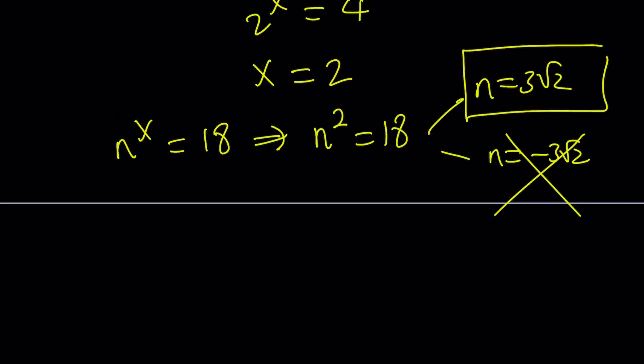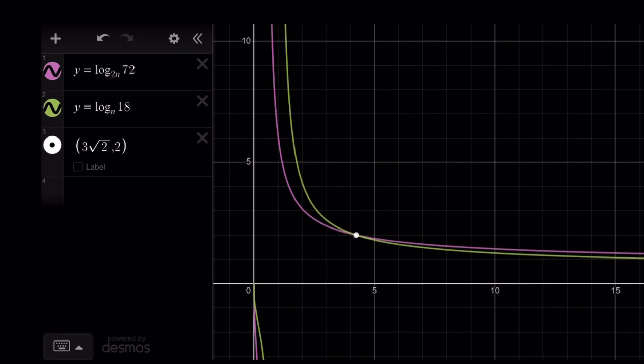Let's take a look at the graph, and you're going to see how the graphs work out. Here's the graphs of these two functions, and they intersect at a single point, which is where x equals 3 root 2.